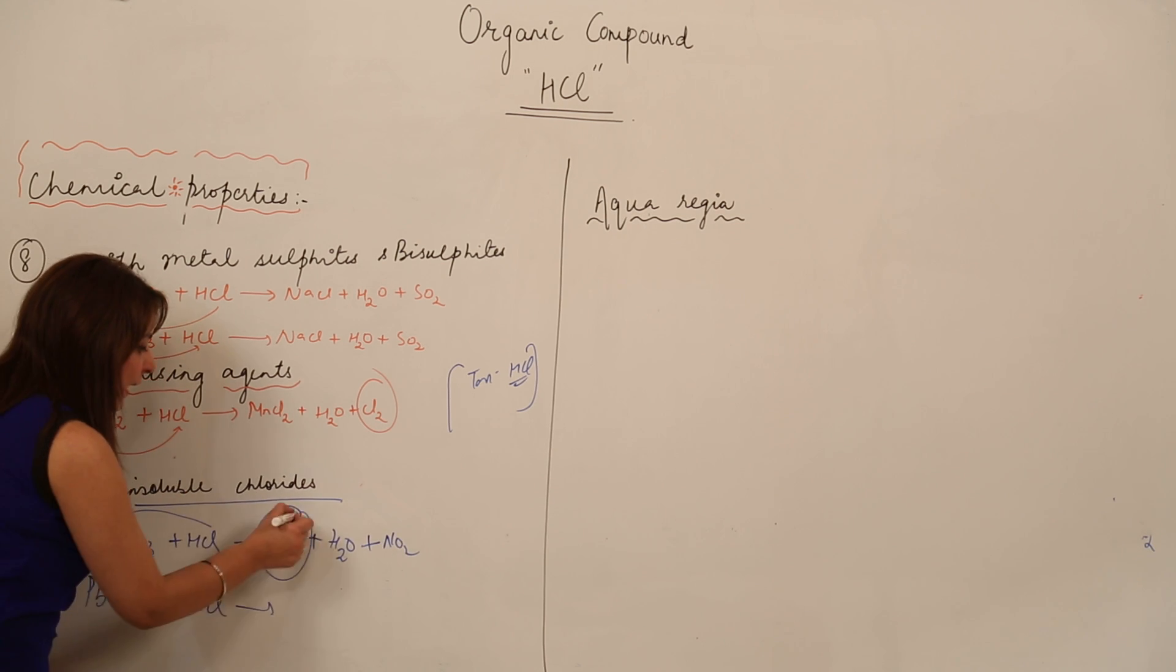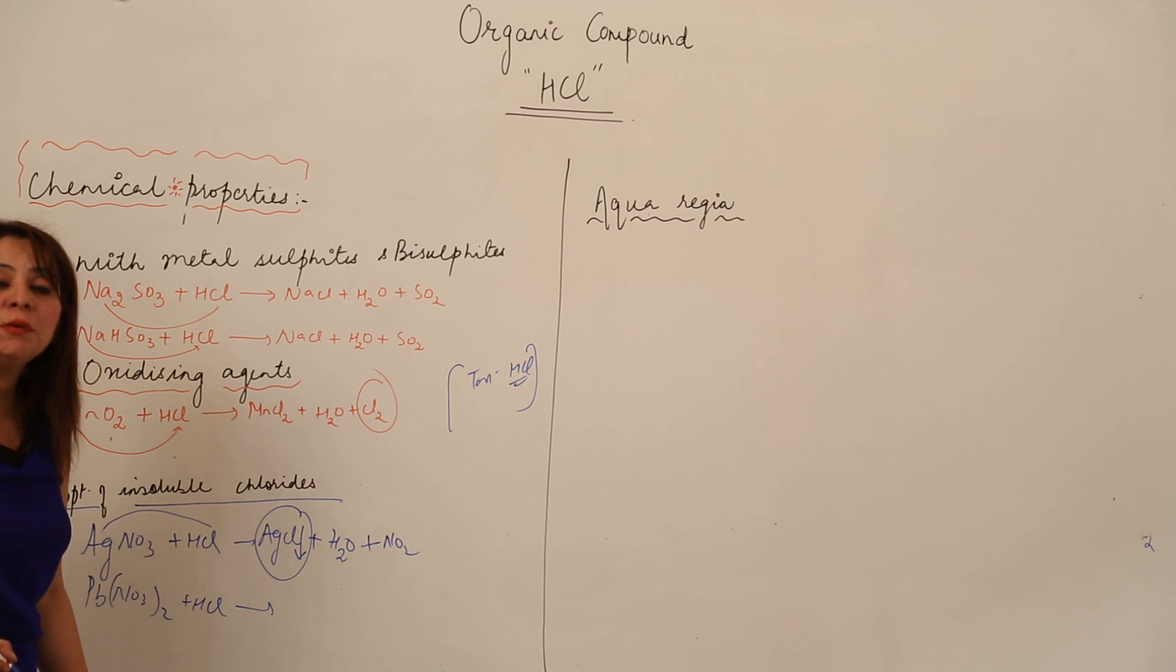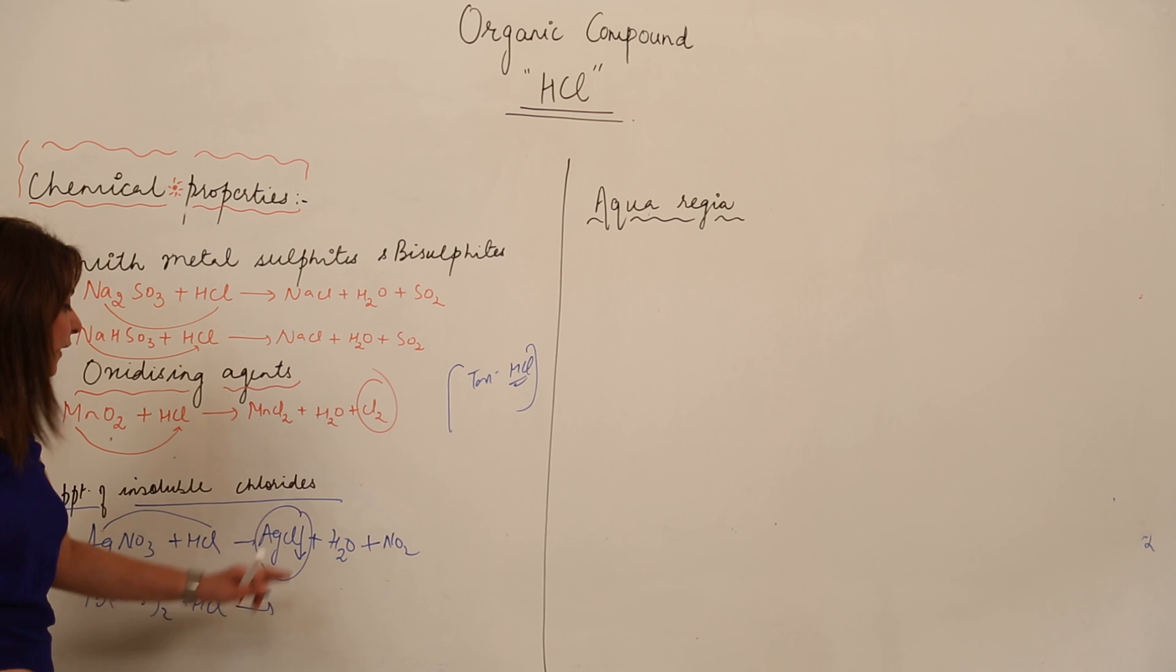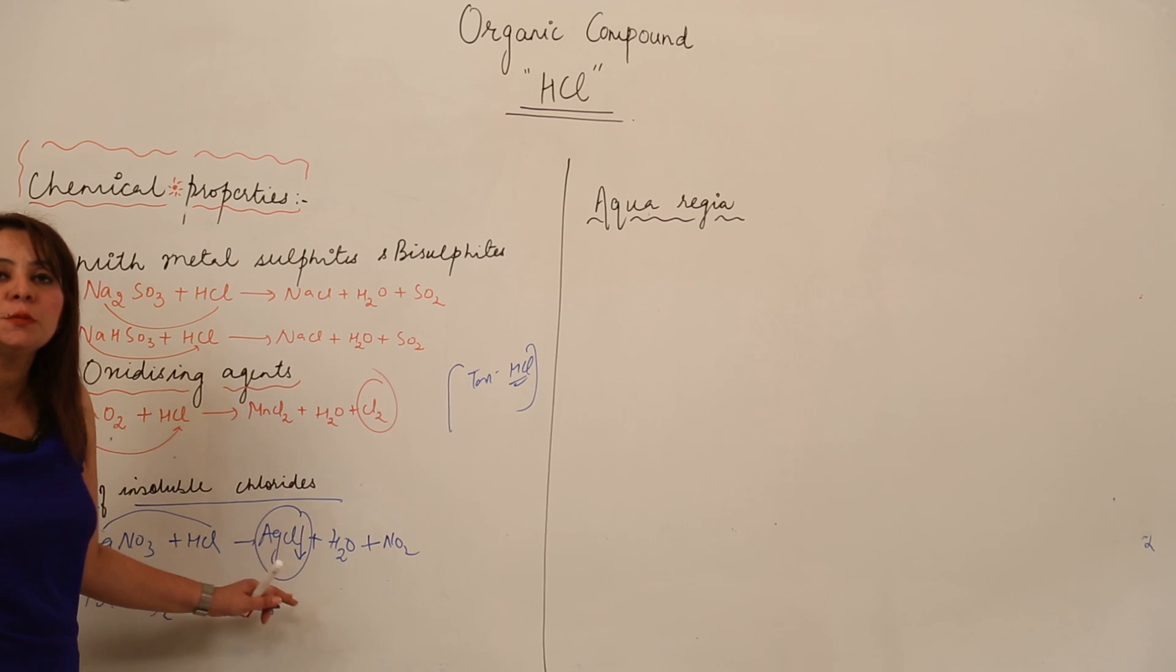This AgCl actually remains behind as a precipitate. What is its color? The color is white. AgCl is an insoluble precipitate left behind with white color.